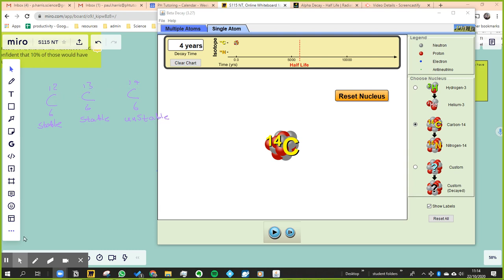This is beta decay that we're going to look at in a moment. In alpha decay, what happened is two protons and two neutrons sort of flew off the atom. And that happens with very large atoms.